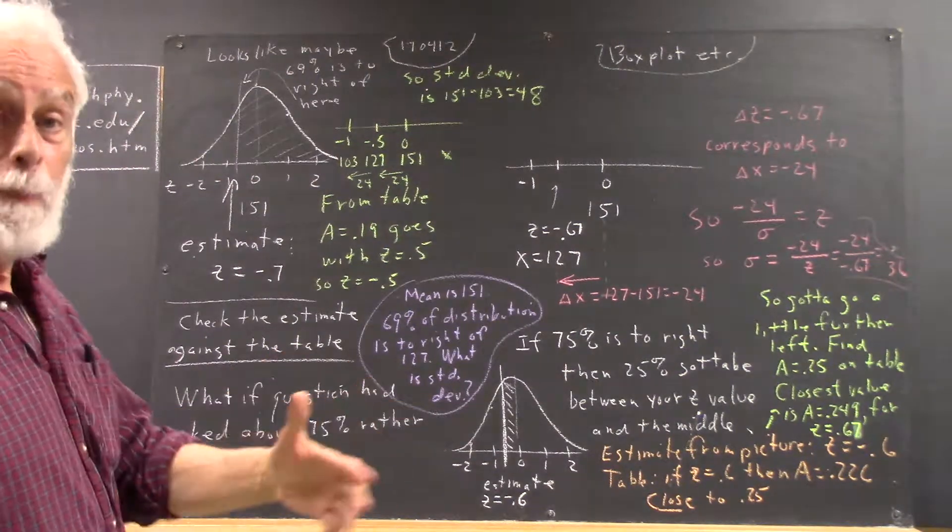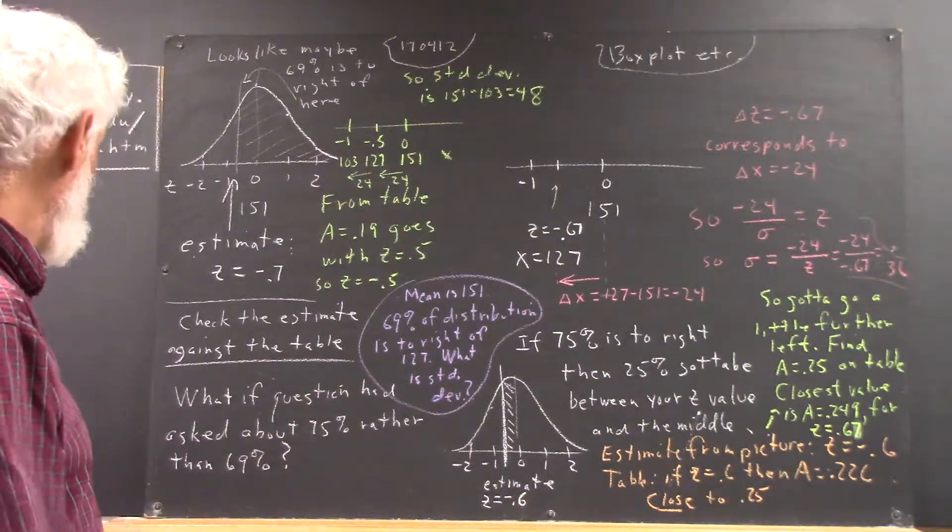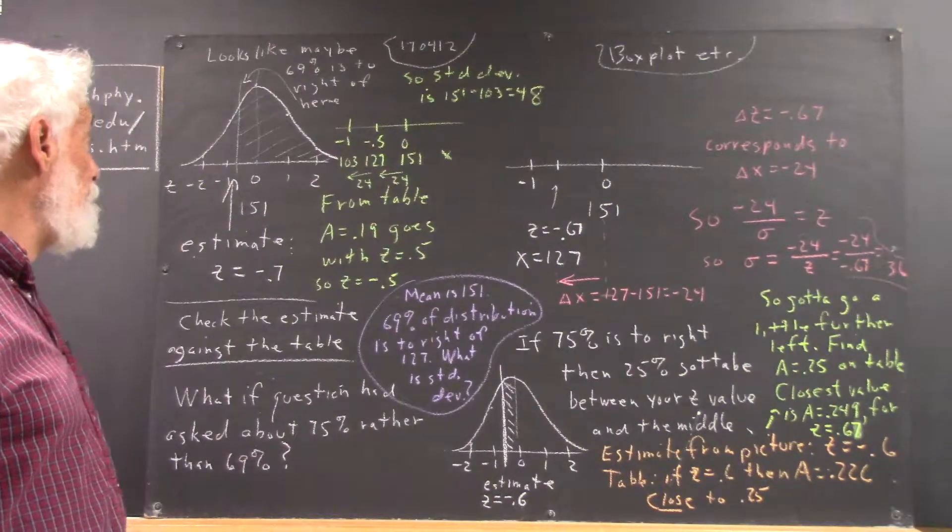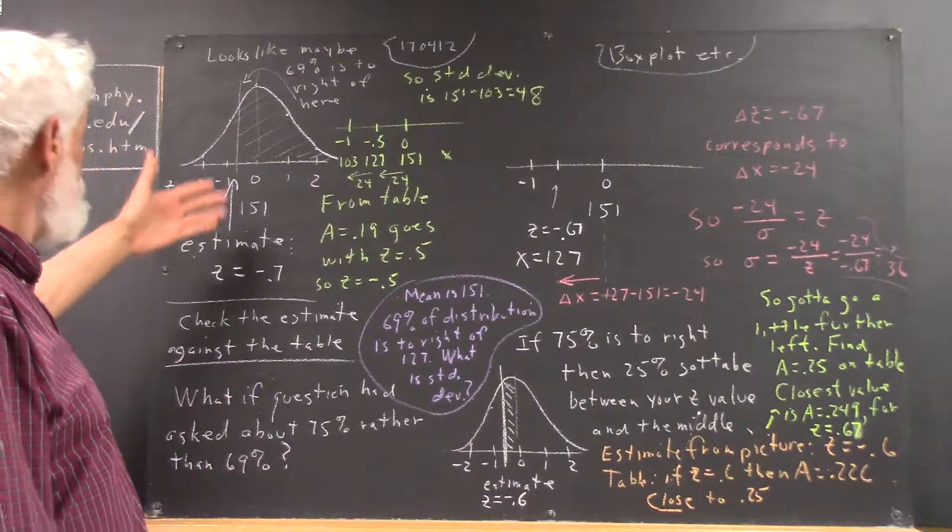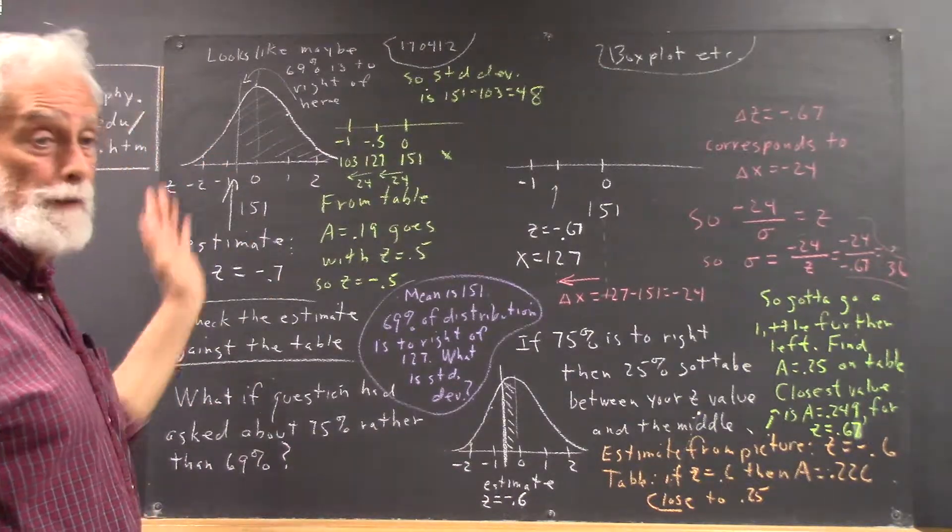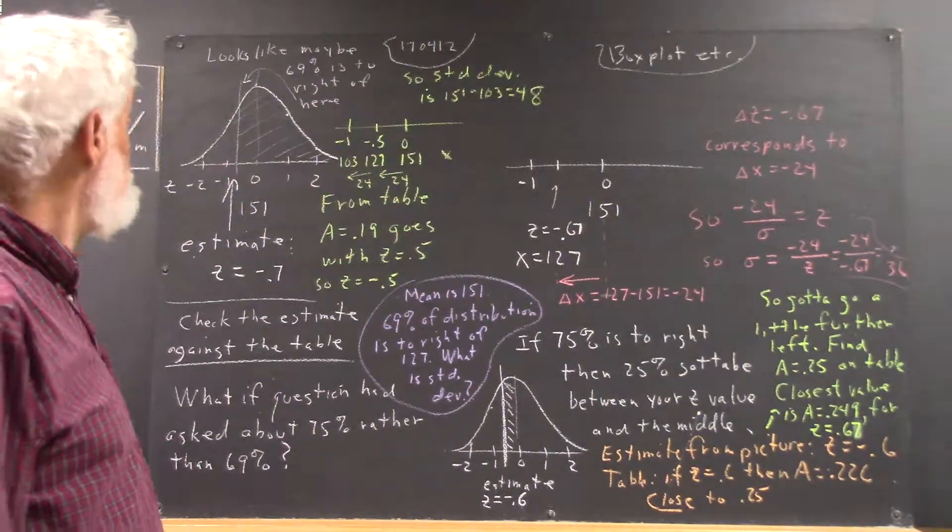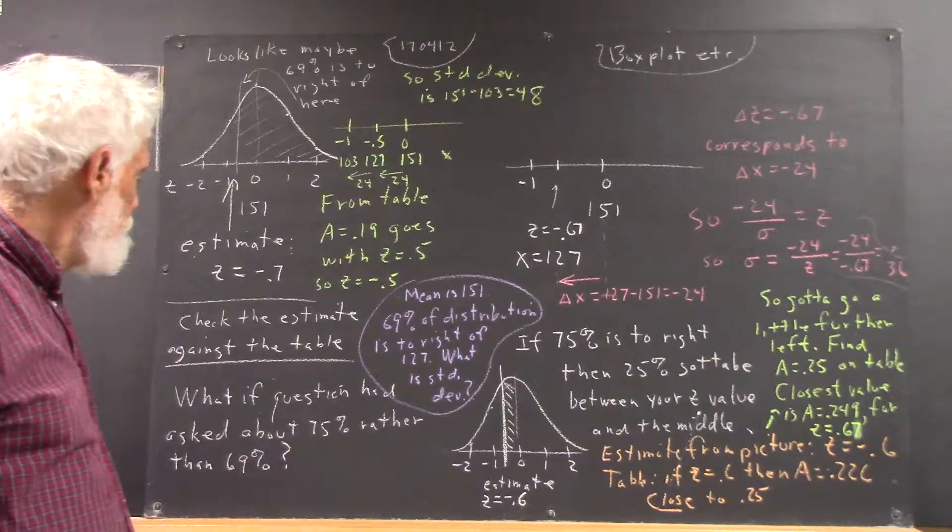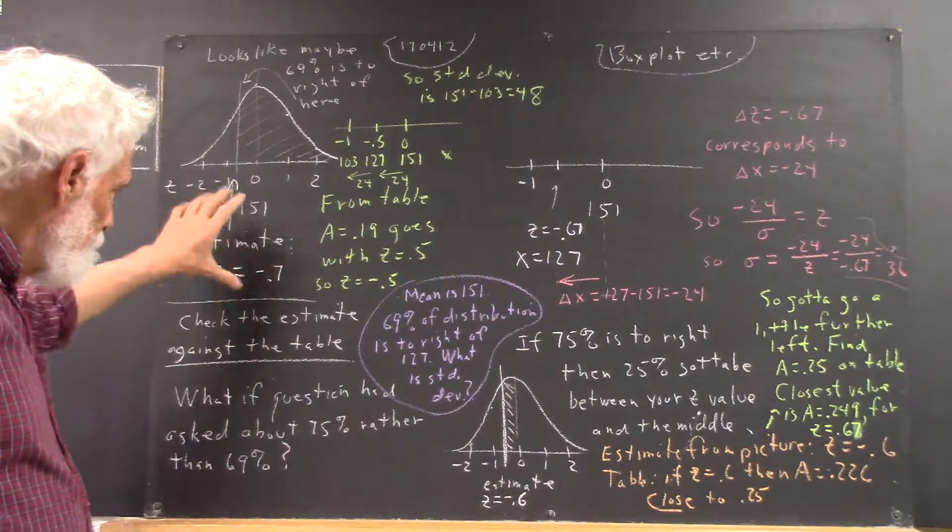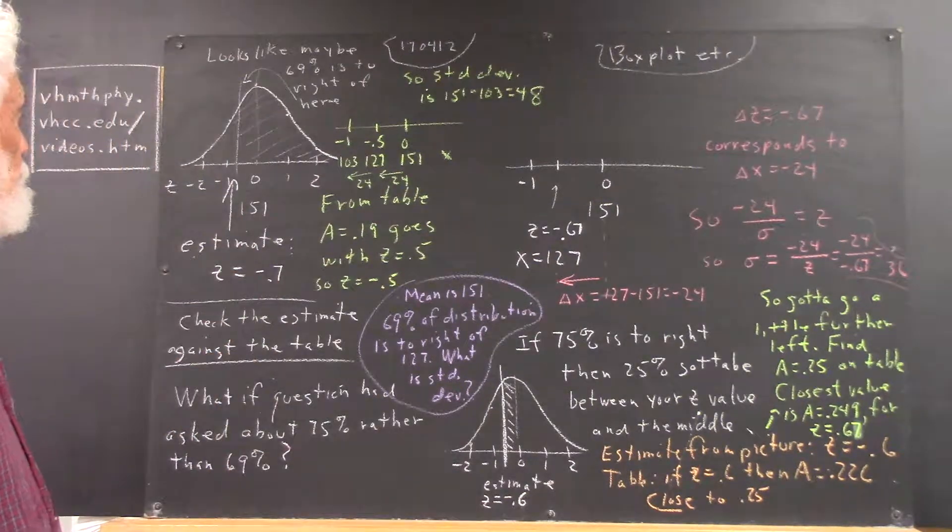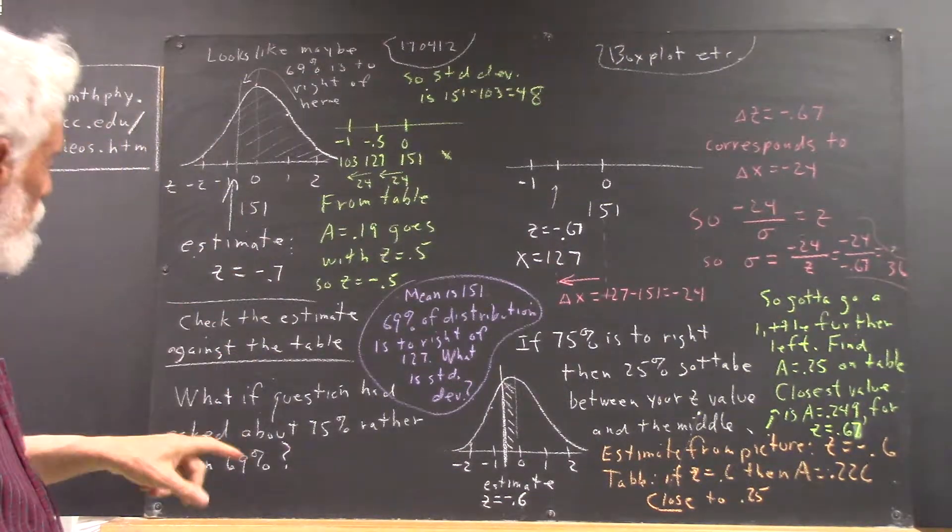Now, some people pretty much figured it out right away, but we want to go through the process. Because, and people who did figure it out, I said, okay, now what if it was 73%? Then, where would you have to split the thing to get 73% of the curve to the right? And that kept people busy, at least for a little while, while everybody else tried to get a grasp of this.